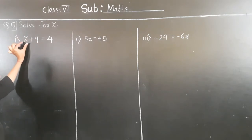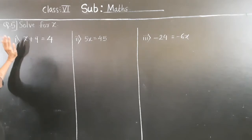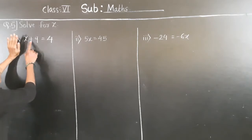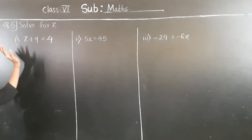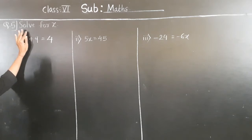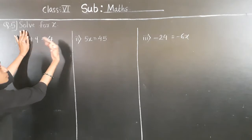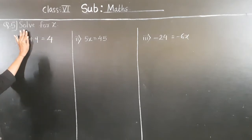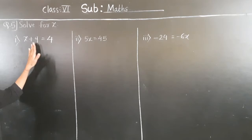Now see, this is the variable and this is the constant. Plus 9 — don't touch the variable, let the variable stay here. If plus 9 is transferred to the right hand side, then it will become minus 9.